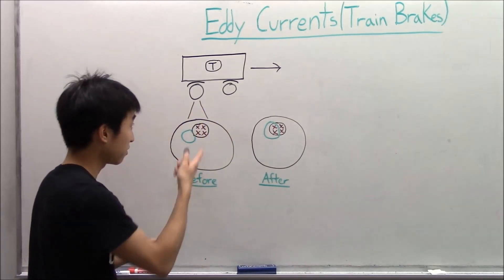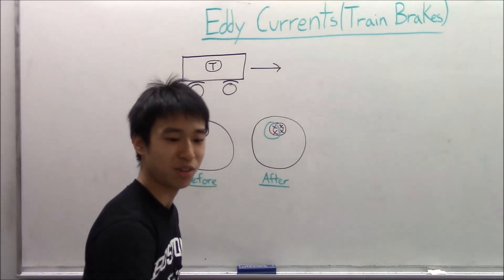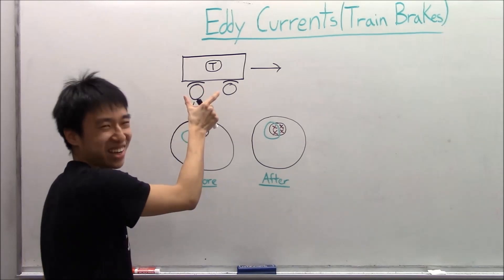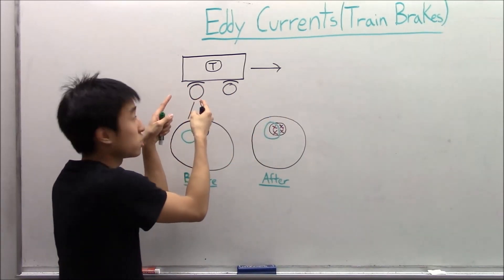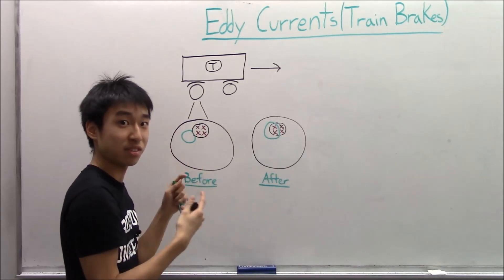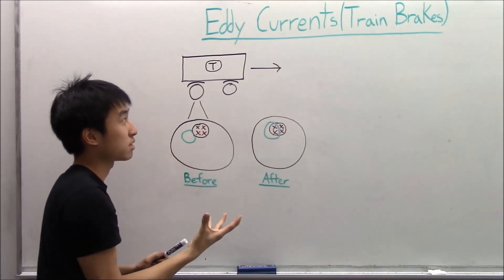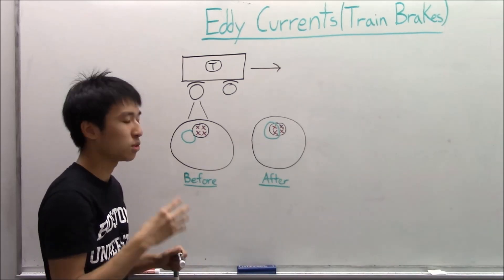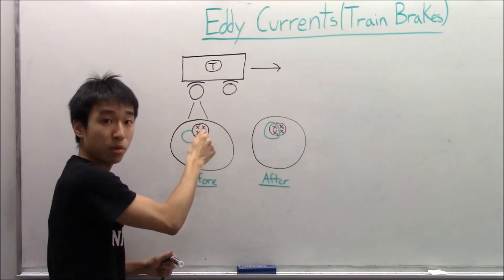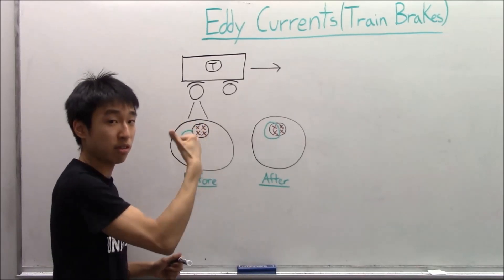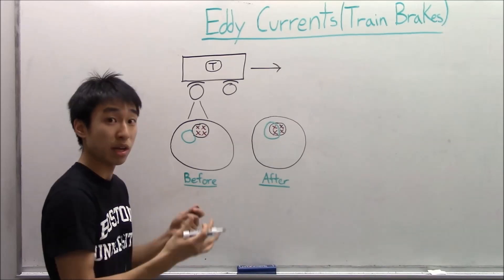Okay, so let's look over here. You have a train that's going to the right, and let's focus on just the wheel because that's where all the cool physics stuff is actually happening. So when we zoom in, sometimes on trains we can use an electromagnet to generate a magnetic field that either goes into the board, like in this example over here, or out of the board. And as the wheel turns, it essentially is going to slow down.